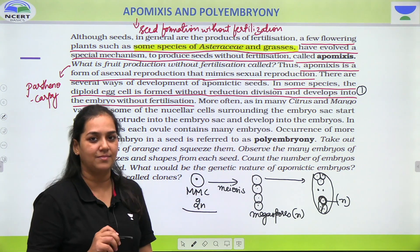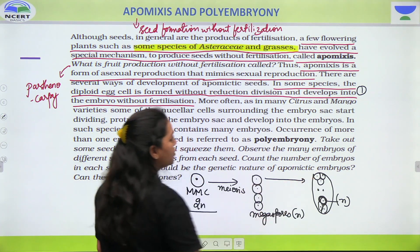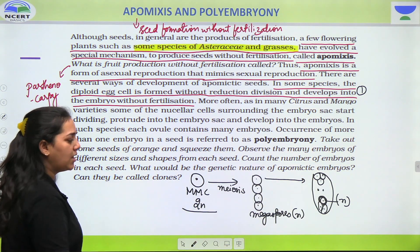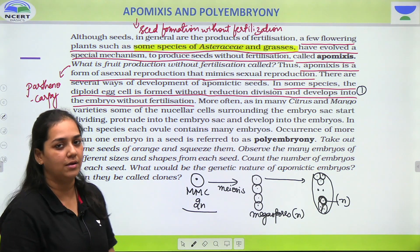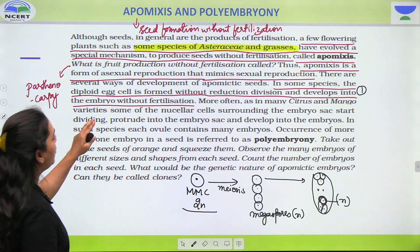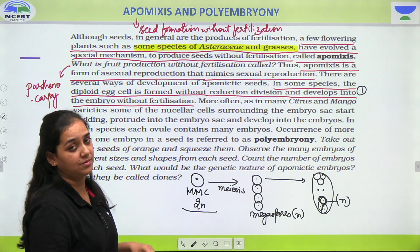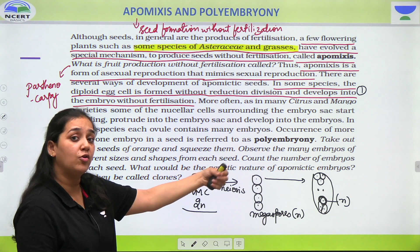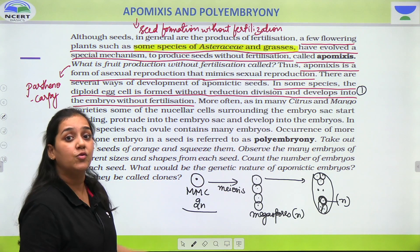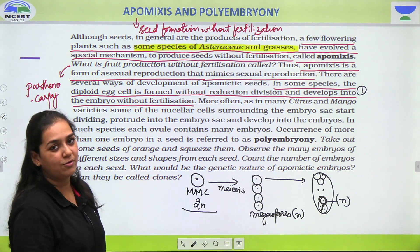There is direct development to give rise to an egg cell. Toh in that case, agar meiosis nahi hua, toh egg cell ka ploidy kya hoga? Diploid. Toh wo jo diploid cell hai, wo directly embryo form karega without fertilization. Egg cell already diploid hai, jo embryo hai usko bhi diploid hona hai, but fertilization ki zarurat nahi hai. Toh kya hoga — ovule will form into a seed, but without the process of fertilization. Toh yeh ho gaya pehla method hamara.